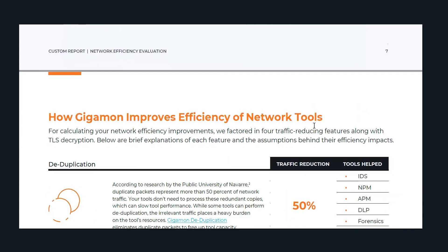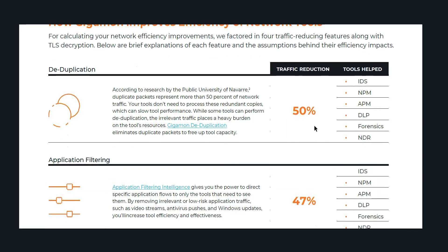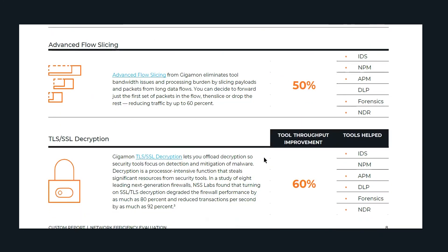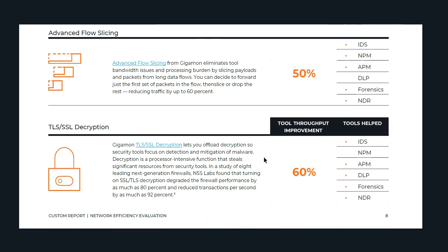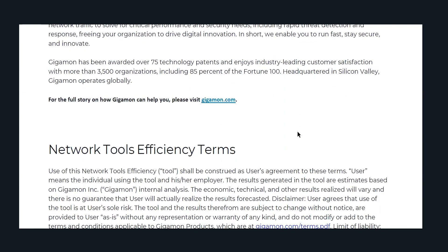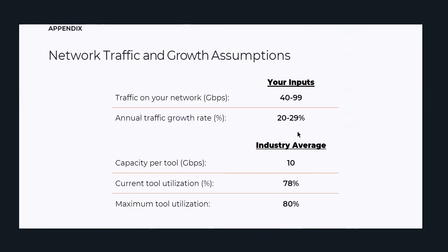We then give you a summary of each of the capabilities featured in the wizard, and based on the inputs we'll give you, in this case, the amount of traffic that's reduced and the tools that are helped. And for centralized decryption, same idea except we focus on tool throughput improvement. And finally at the end, in the appendix, we show you the inputs that you entered into the wizard.